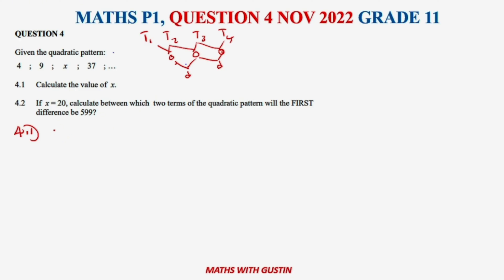4.1 says: calculate the value of x. The pattern is 4, 9, x, 37. We calculate the first differences: 9 minus 4 gives us 5, x minus 9 remains as x minus 9, and 37 minus x gives us 37 minus x. So the common difference is what we are looking for, which involves x minus 9.